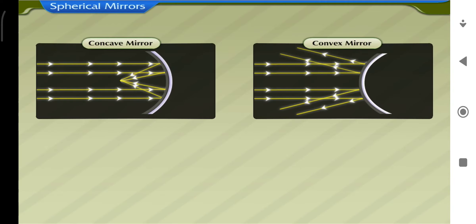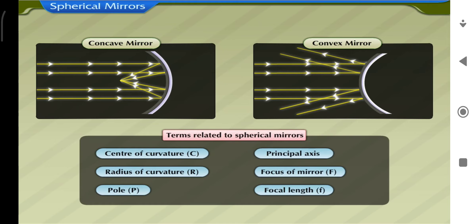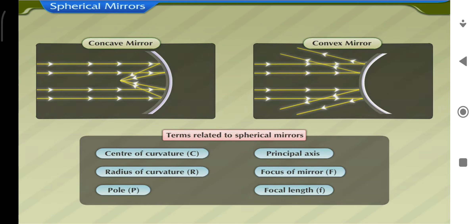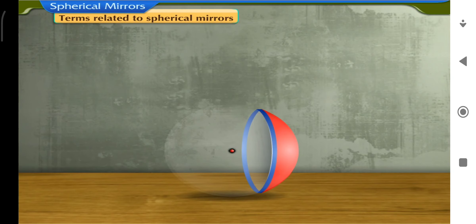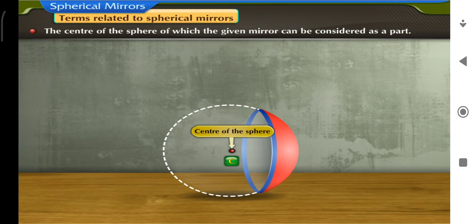Before we see how reflection takes place in these mirrors, we should get familiar with certain terms related to spherical mirrors. The center of curvature, abbreviated as C, is the center of the sphere of which the given mirror can be considered as a part.